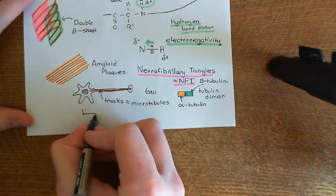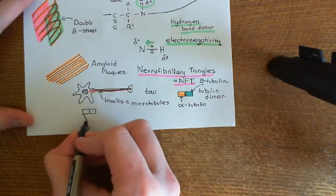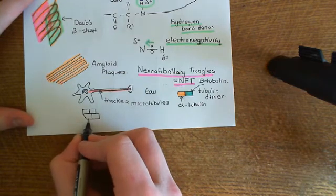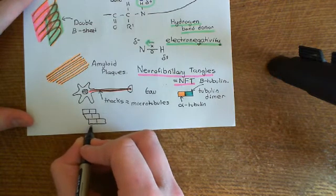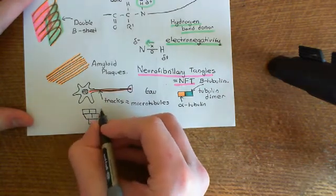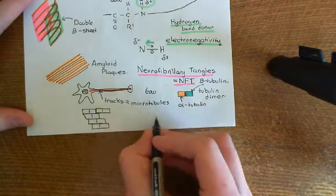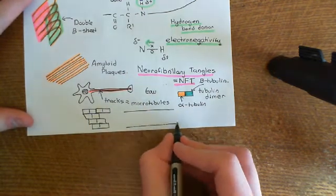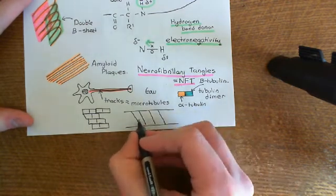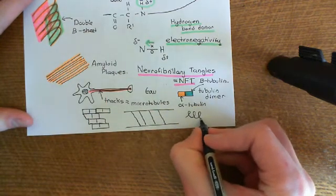You start off with a single tubulin dimer, and then you add another one on. These are going to spiral in an alpha helical way — it will be slightly further along than the one previously. What's going to happen is it spirals around. The microtubule is going to be made up of these tubulin dimers that spiral around in an alpha helical, spring-like way, but instead of having gaps between the different portions of the spring, you compress the spring completely so that there are no longer any gaps.